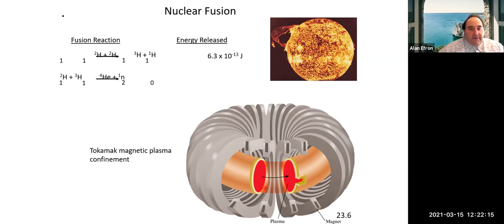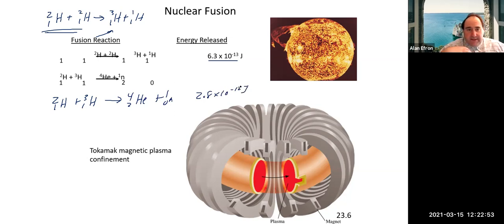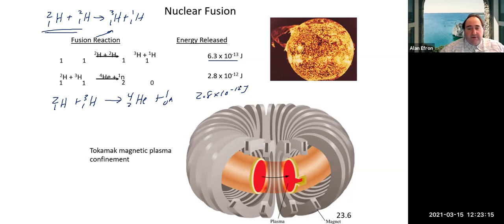Another important reaction is fusion. Unlike fission, in a fusion reaction two smaller nuclei are combined to make a larger one, releasing energy. This requires extremely high temperatures — on the order of those found in the sun. In summary: fission is the splitting of a nucleus (spontaneous or neutron-induced) into two smaller nuclei plus neutrons and energy; fusion is the combining of smaller nuclei into a larger one.